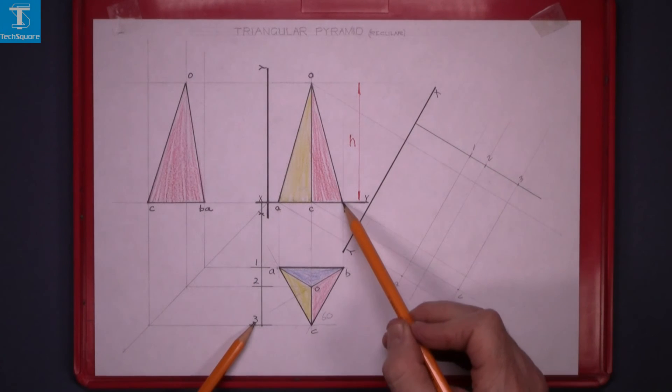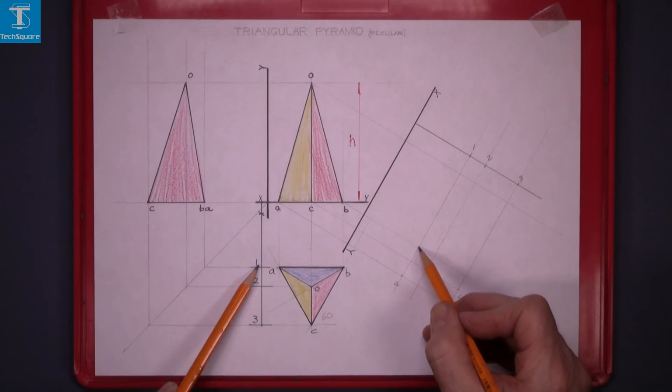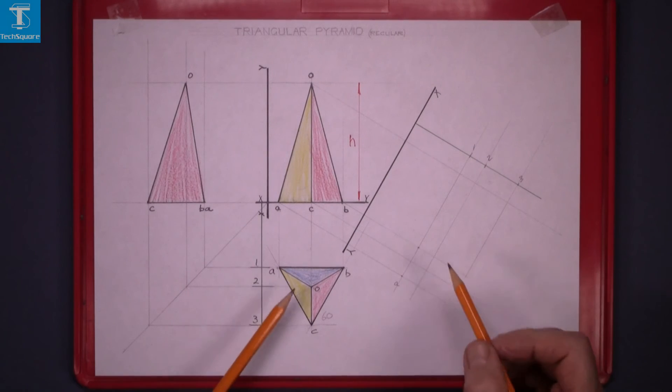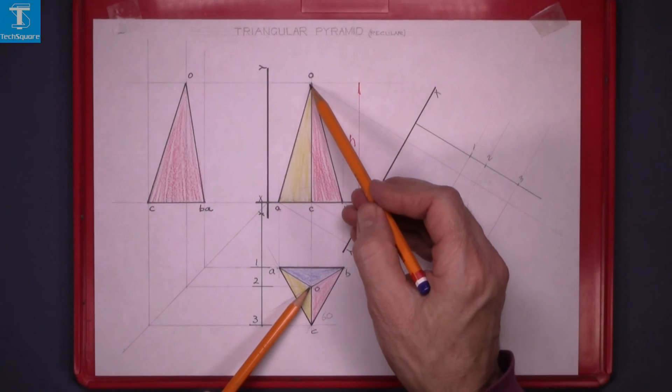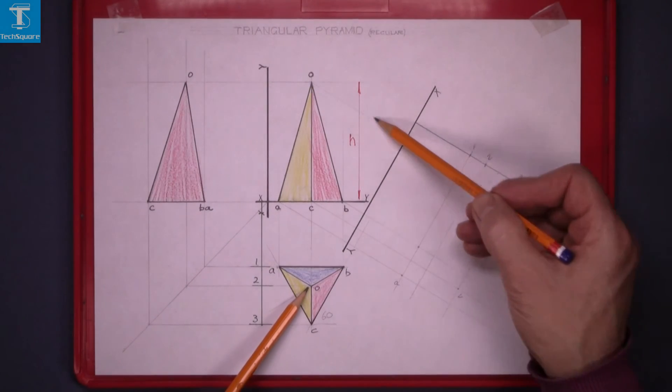Point B now. It's in elevation. In plan it's on line 1. So bring B down to line 1, and that gets you that point there. Point O is the top point. It's on line 2. Bring O down to line 2 here.